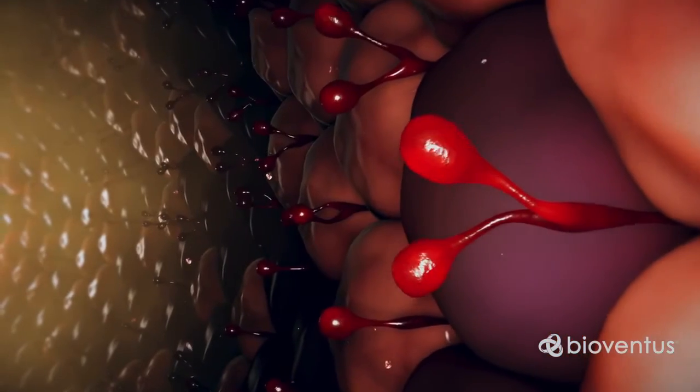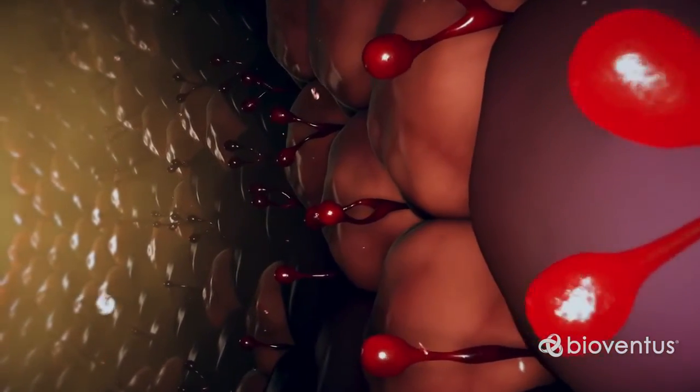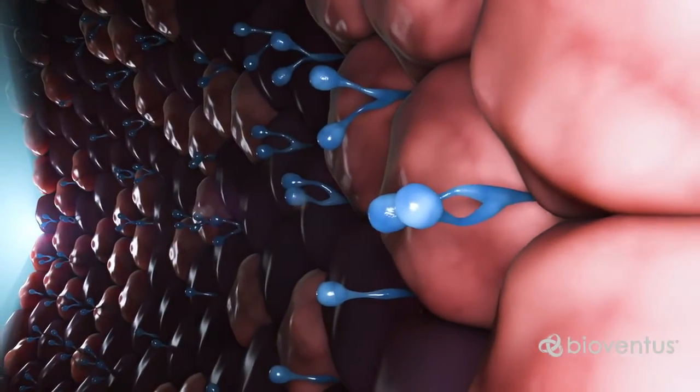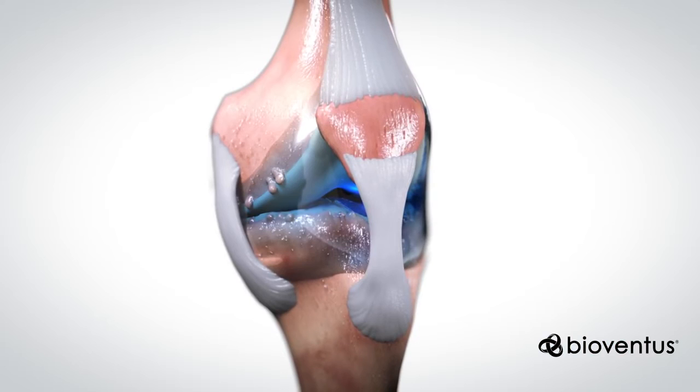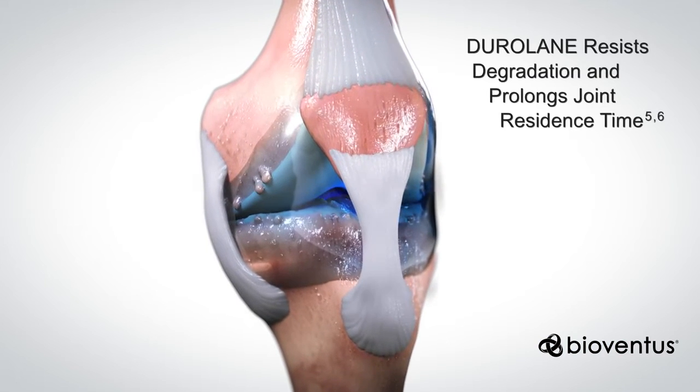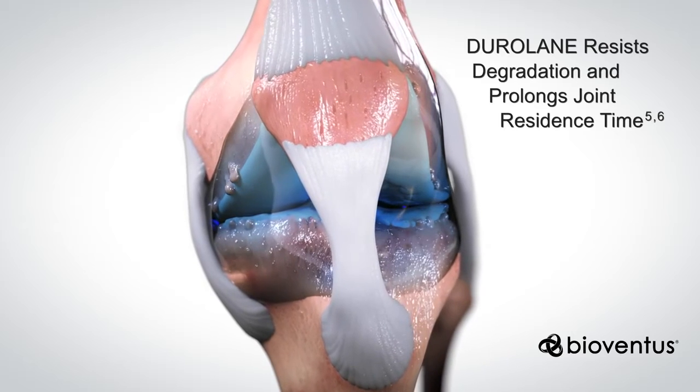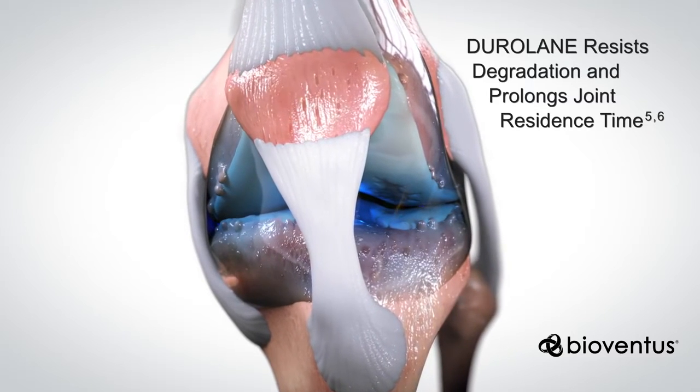Clinical and preclinical studies have shown that duralane has a protective effect on cells and tissues in an osteoarthritic joint. Preclinical research in animal models and cell culture suggests that, due to the unique NASHA technology, duralane resists degradation and prolongs joint residence time.